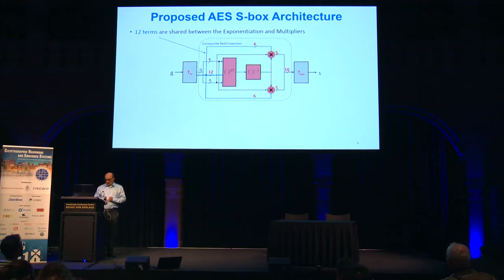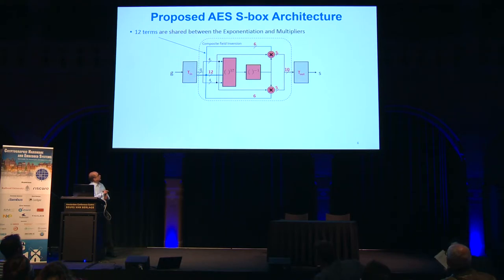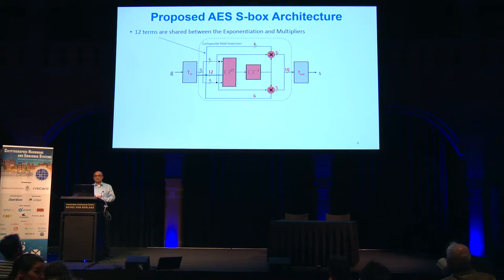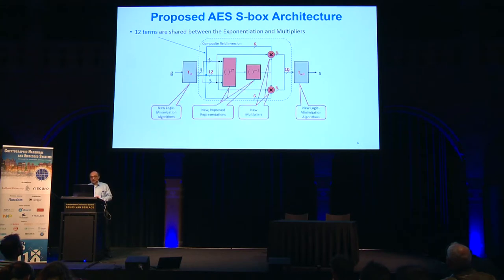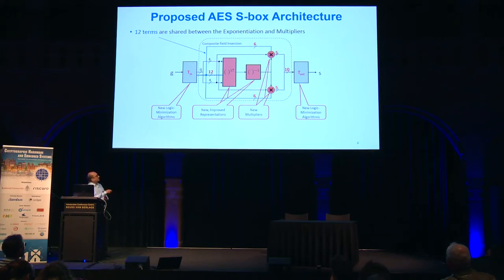Our proposed architecture has the input transformation, which transforms the 8 inputs to 20 inputs. There are 12 additional terms not seen in the previous original S-box, and these terms are shared between the exponentiation and multipliers. For this architecture, we propose new logic minimization algorithms for the input and output transformation, new formulations for exponentiation, a subfield inverter, and the output multipliers. After designing each block, we try to use all the available resources — optimizing by hand and by CAD tools — then use the optimized block in the entire S-box.